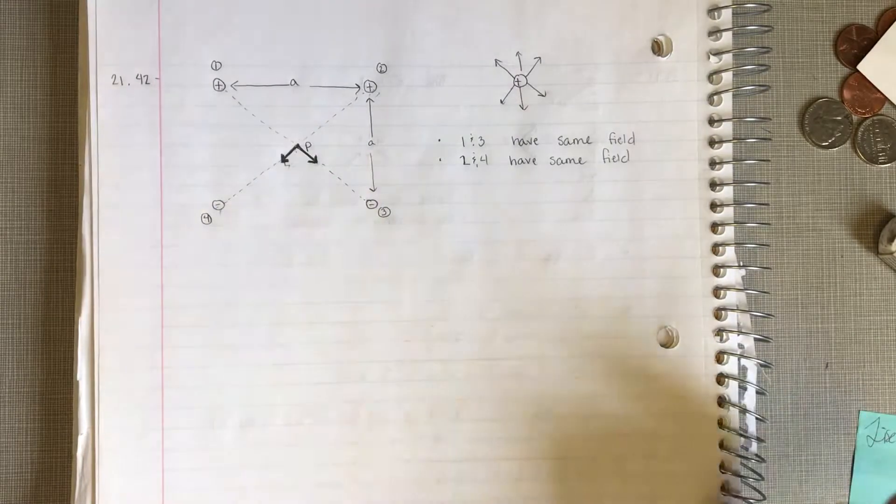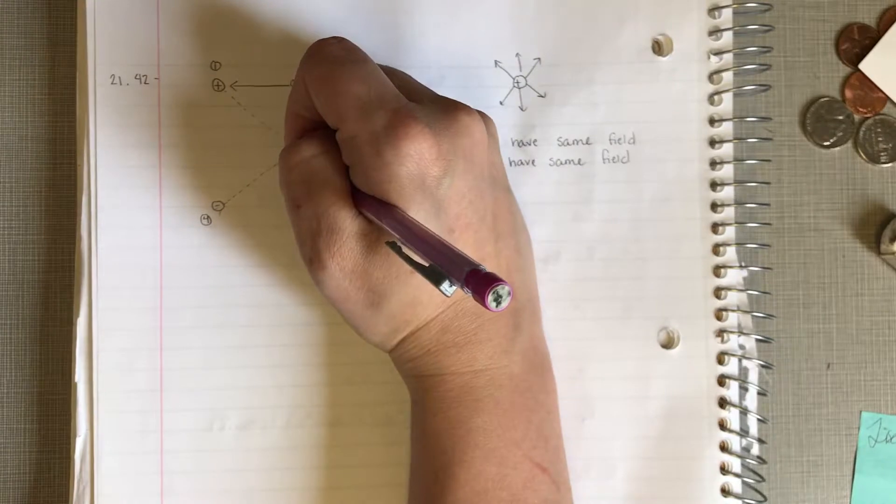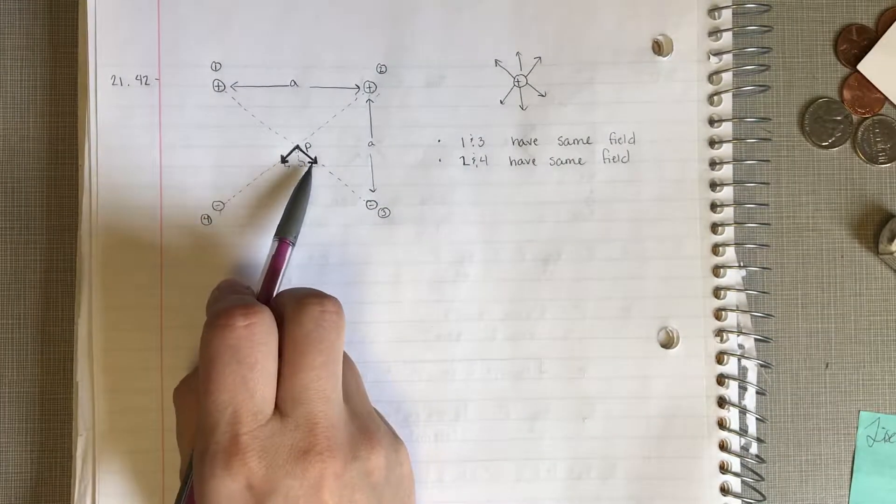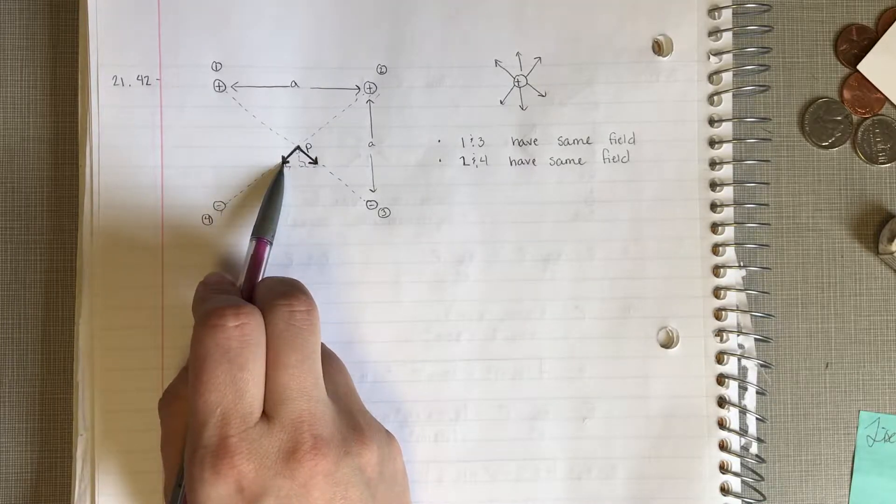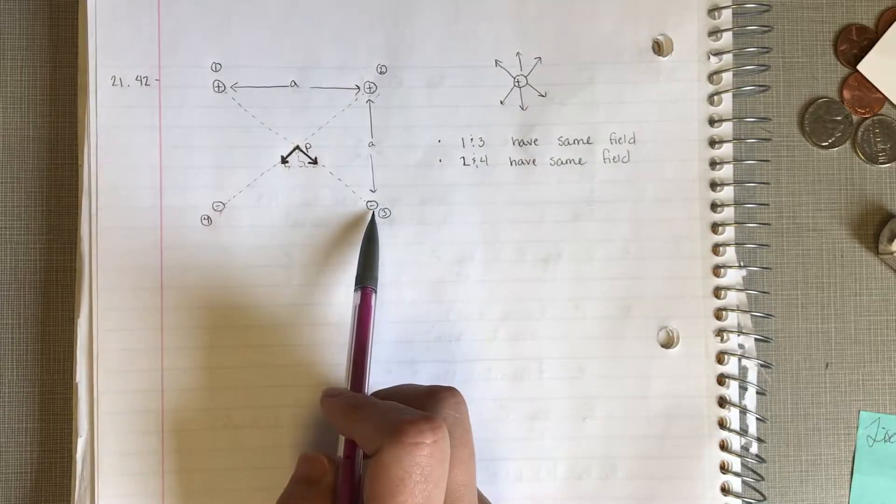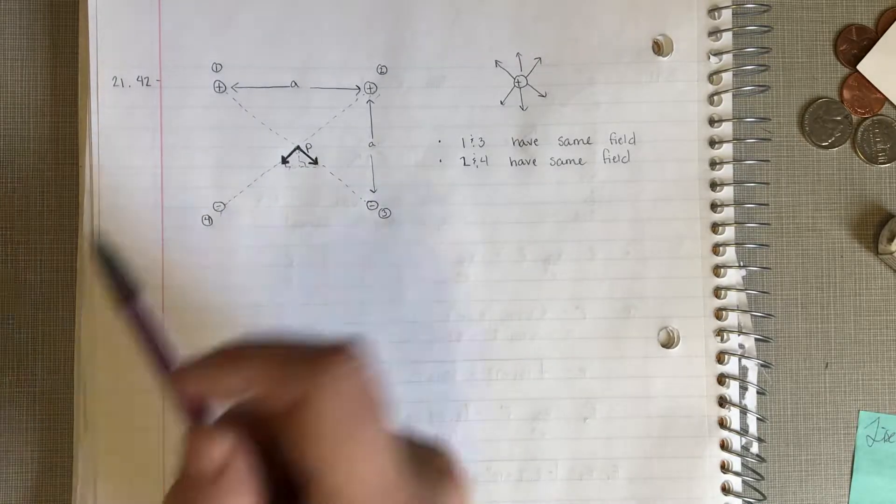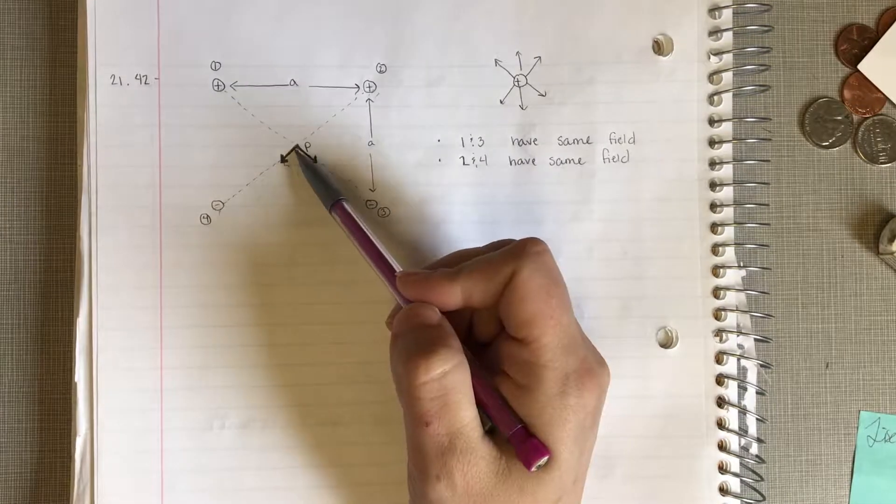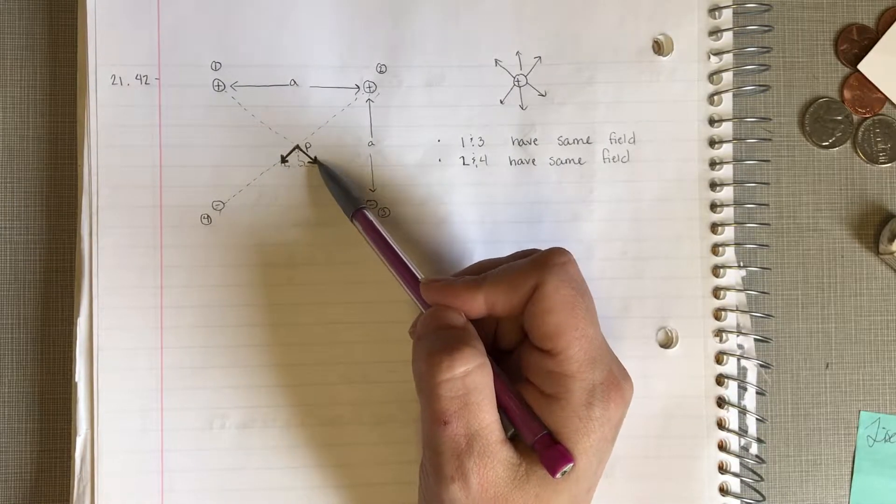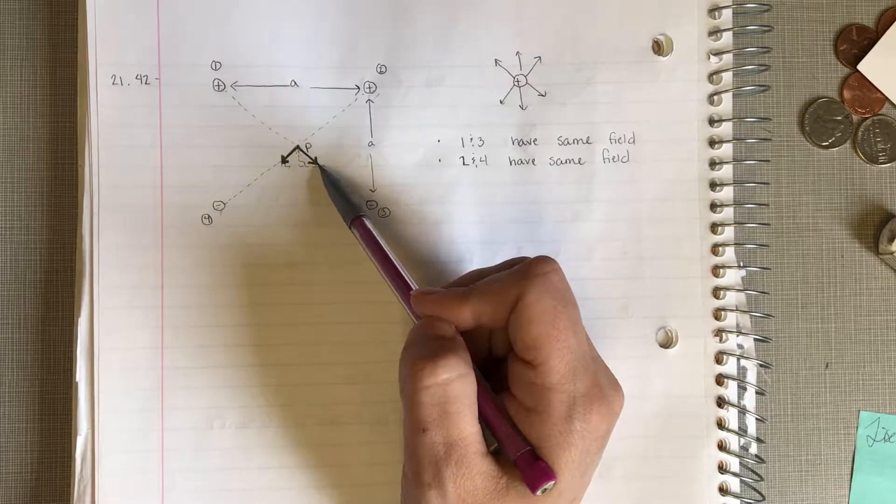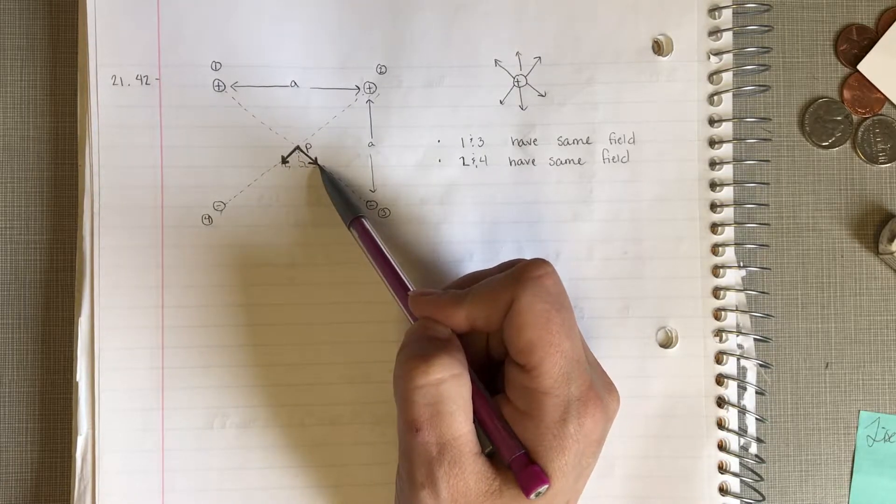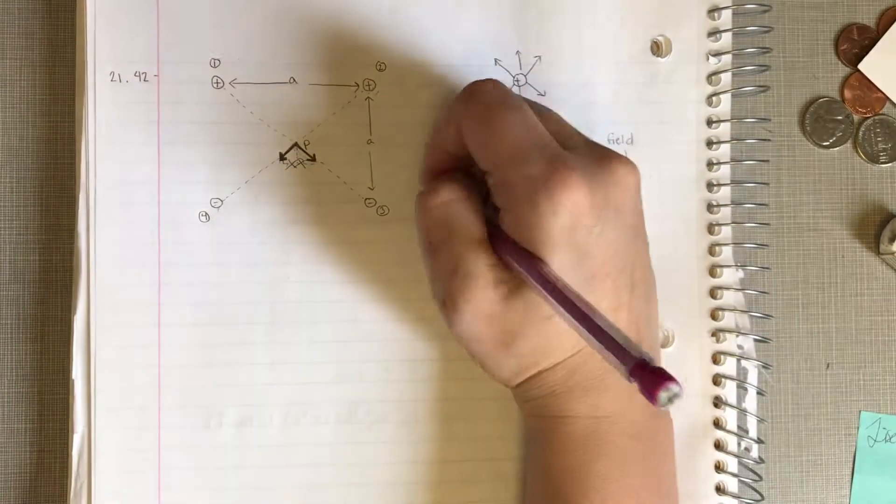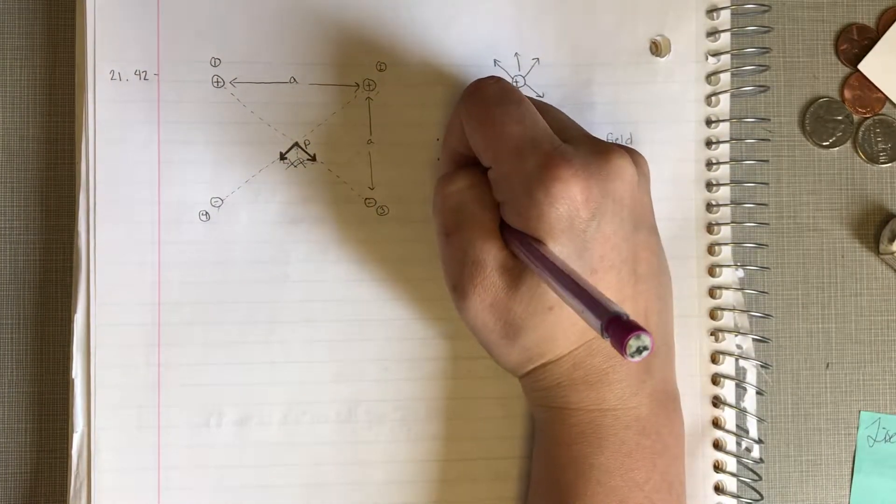Okay, so if we look at this, we can also make some more symmetry arguments. If we break this down into an x and a y, this one's pointing down to the right, this one's pointing down to the left. These guys have the same value of charge. They're all the same distance away. So, that means the magnitude of this one is the same as the magnitude of this one. And this direction is going to be the same but opposite of this one. So, these x components are going to cancel out.